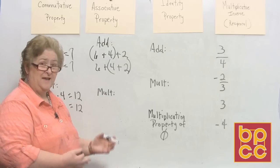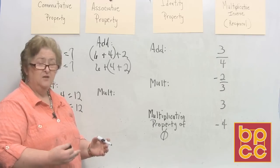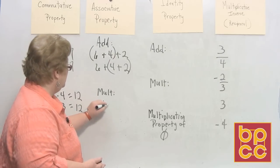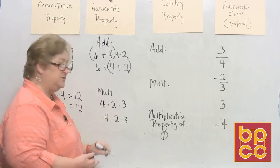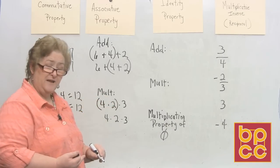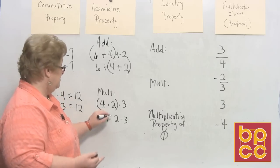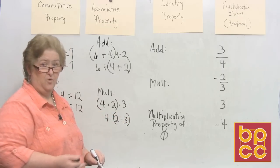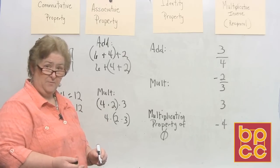The numbers are in the exact same order, but the way I group them is different. That's what makes it the associative property. So the associative property for multiplication would look just the same. If I have 4 times 2 times 3, and down here I have the very same numbers in the exact same order, then perhaps this person might want to group it 4 times 2 is 8, and then 8 times 3 is 24, whereas someone else might like or know their multiplication better this way: 2 times 3 is 6, and 6 times 4 is 24. So those are examples of the associative property for multiplication.